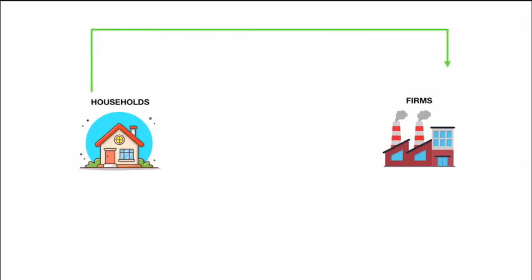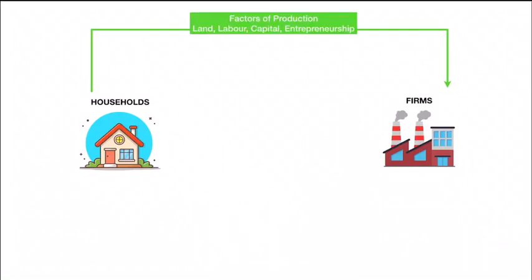Now, the business sector needs some basic requirements to run its business. These are called factors of production. Land means land and other infrastructures like buildings, roads, etc. Labor means manpower. Capital means money to buy machineries and start the business, and entrepreneurship means a business mind, a business structure.